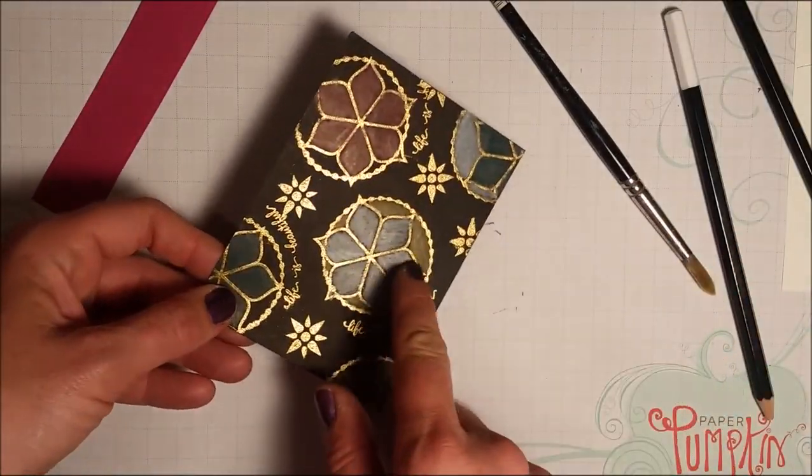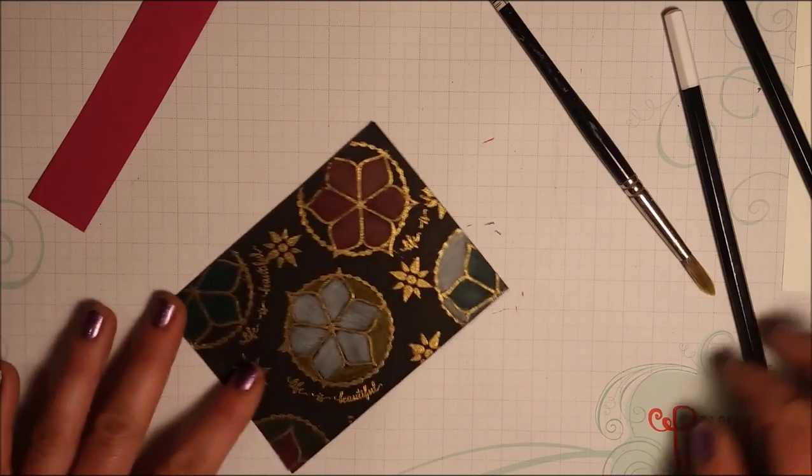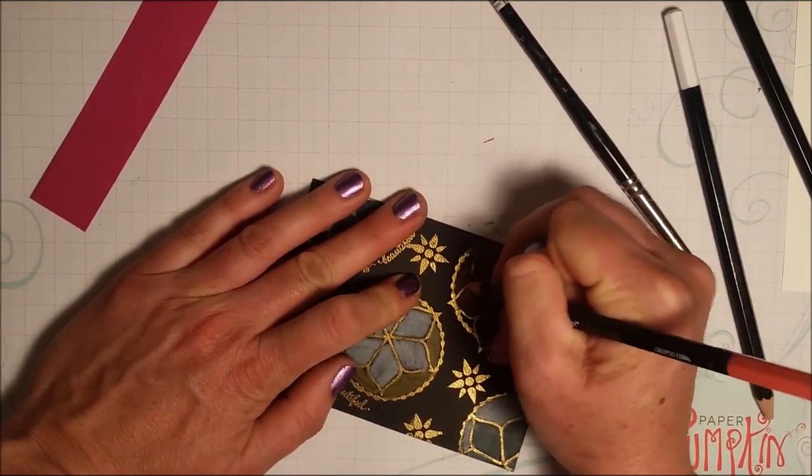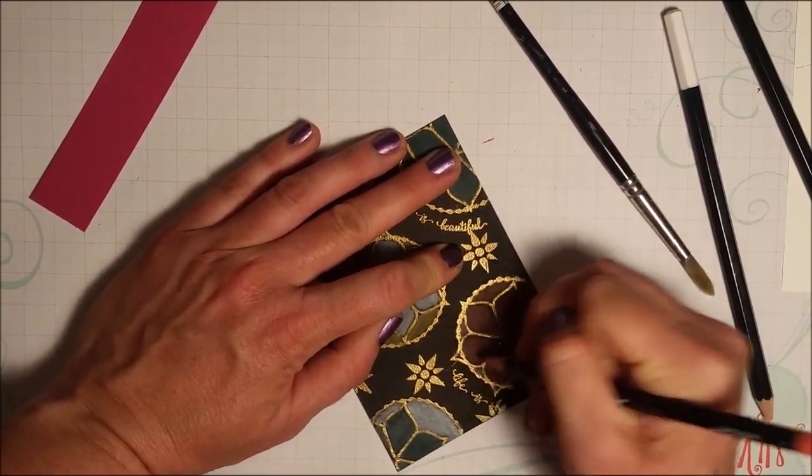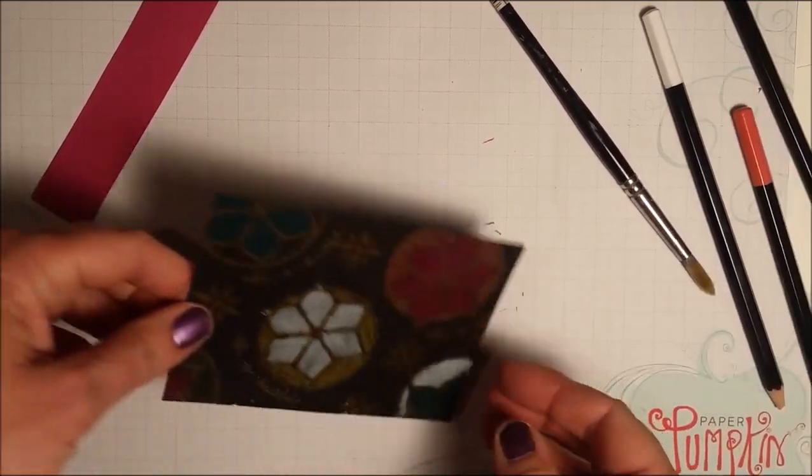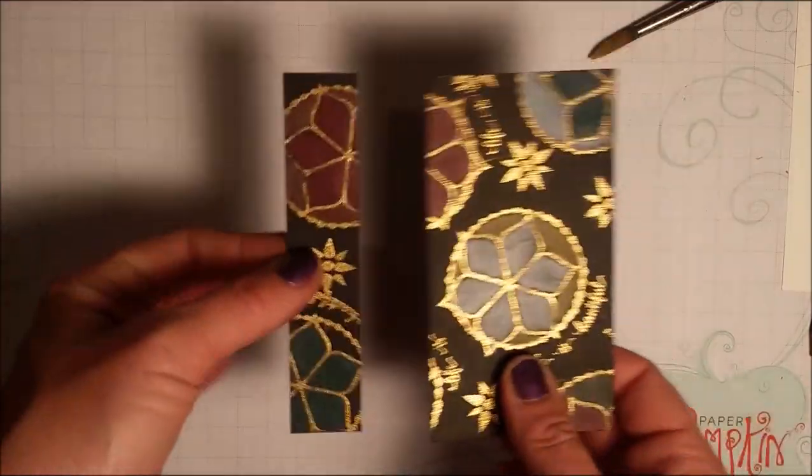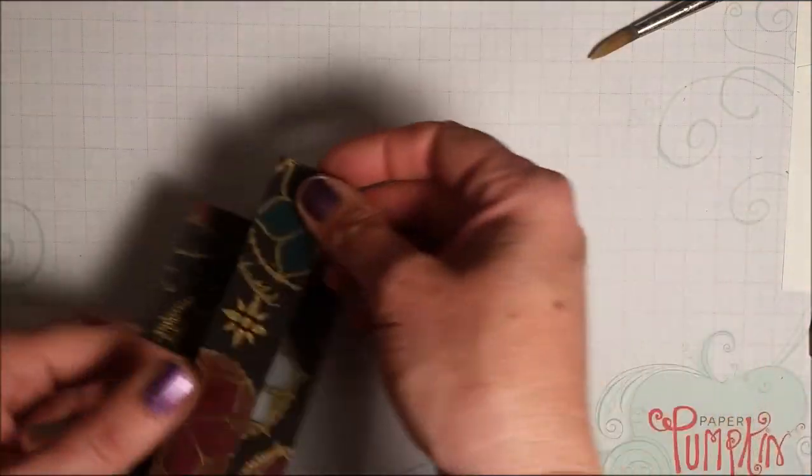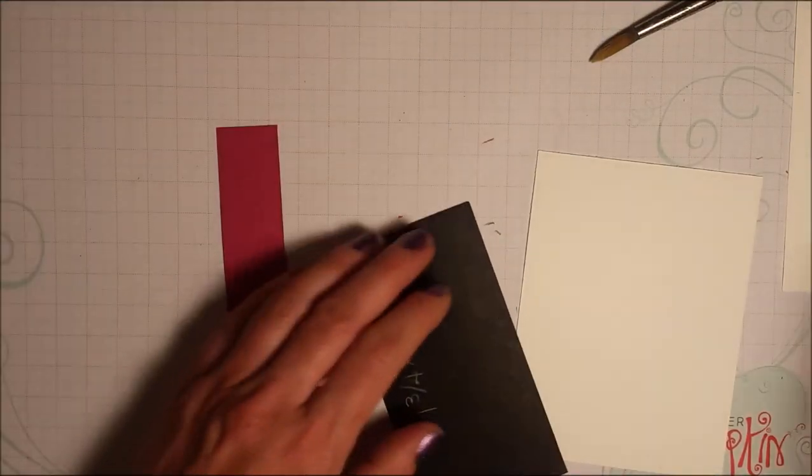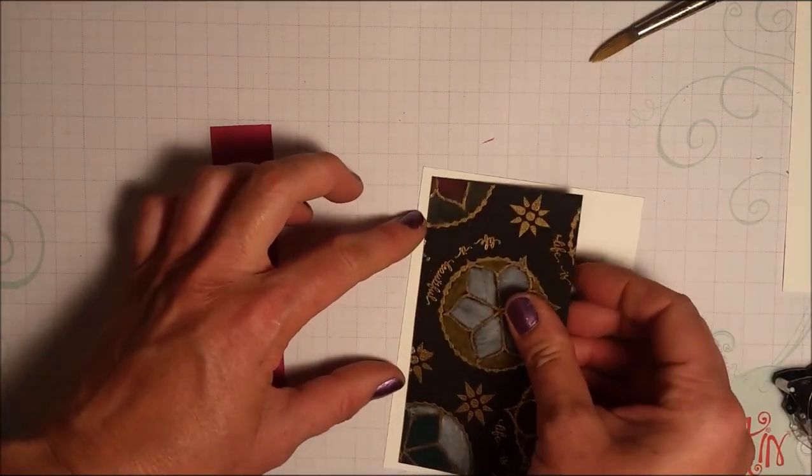And in fact, what might not be a bad idea is actually trimming that little piece off. And then you could use that for a different card. So I'm going to keep coloring. So there's my coloring done. Isn't that pretty? So nice. I just trimmed off one inch from this. I'm going to save this for another card. Now I'm going to take these pieces and adhere them to my Whisper White.